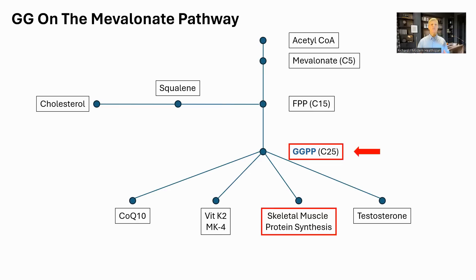GG is critical in protein synthesis and post-translational modification in a process called prenylation, where a GG or a farnesyl unit is attached to a protein. This is required for proper operation of many processes, including the synthesis of other proteins, which is why skeletal muscle protein synthesis requires GG. Although the mechanism is less clear, GG is also involved in the synthesis of testosterone. We will see that in the clinical trial, it was able to raise low testosterone levels in men.